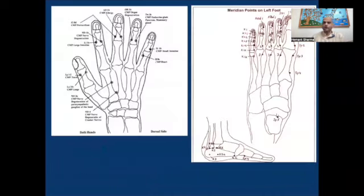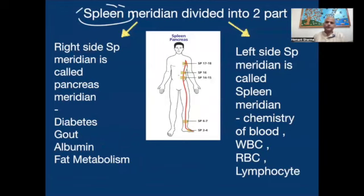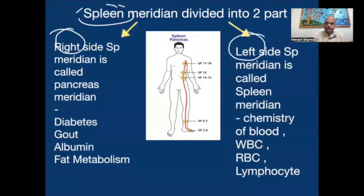Dr. Bohl points are on the border of bone, and he has divided the spleen meridian into two parts — one is spleen and another is pancreas. So the pancreas meridian is found on the right side and the spleen meridian is found on the left side.